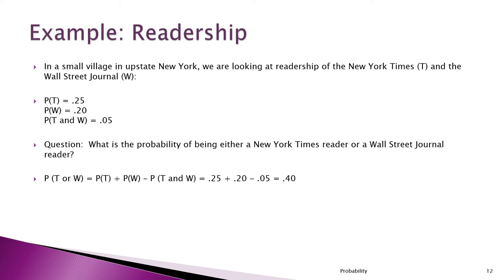Using the rule of addition: the probability of reading the Times or the Journal is 0.25 plus 0.20 minus 0.05, because we don't want to count those people twice. So 0.25 plus 0.20 minus 0.05 equals 0.40. Forty percent of the population reads at least one of those papers.